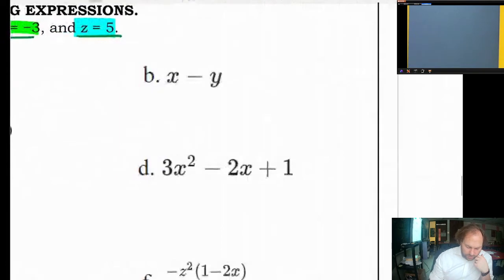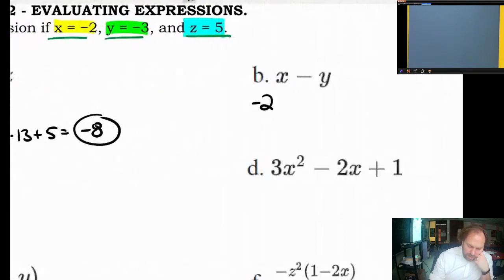Question B. We're going to move kind of quick through these once we get the hang of it. Negative 2 minus negative 3 is the same as negative 2 plus 3, which is positive 1. I'm just going to write a negative sign. It's positive 1.